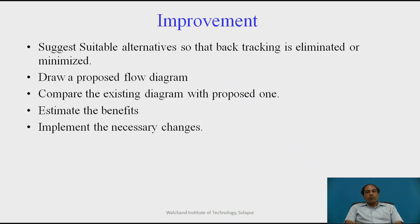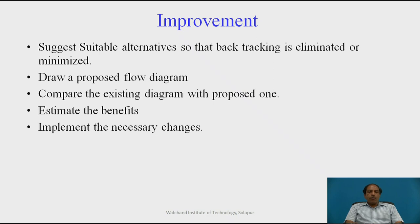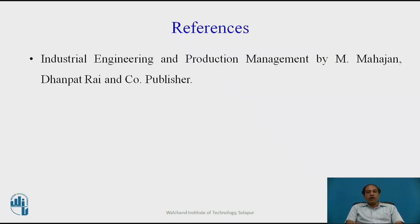Once this is done, we implement the process with the necessary changes. After implementation, we compare the existing flow diagram with the improved flow diagram to see where and what we have saved and how much it has helped. This should also make possibilities for productivity improvement. Sometimes it happens that material movement and worker movement are reduced and time is saved, but it is not reflecting in the final productivity figures. Once improvement in productivity is possible, we set new norms and improvement becomes a routine practice.